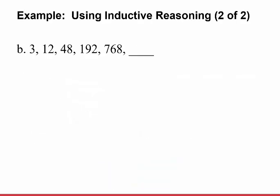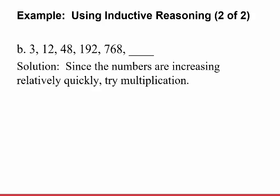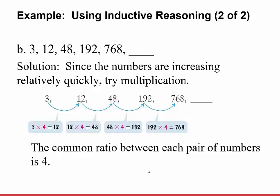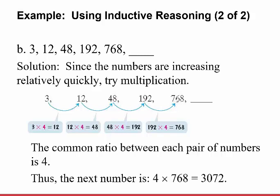Next sequence: 3, 12, 48, 192, 768. Since the numbers are increasing relatively quickly, try multiplication. To get from 3 to 12, multiply by 4; 12 times 4 gives 48; 48 times 4 gives 192; 192 times 4 gives 768. The common ratio between each pair is 4. So the next number is 768 times 4, which equals 3,072.